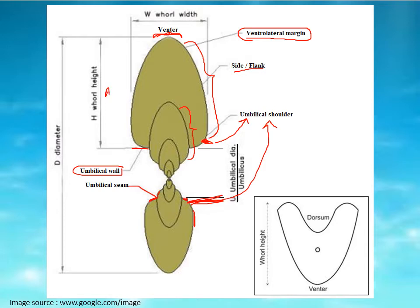Similarly, the maximum width of the last whorl is known as whorl width or aperture width. These are very important parameters to measure when describing cephalopod shells, as they vary from species to species, genus to genus, and family to family. For each whorl, the farthest part from the axis of coiling is ventral, while the closest part to the axis of coiling is the dorsal part or dorsum.